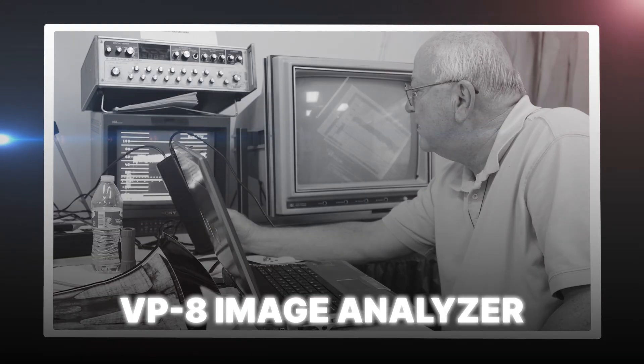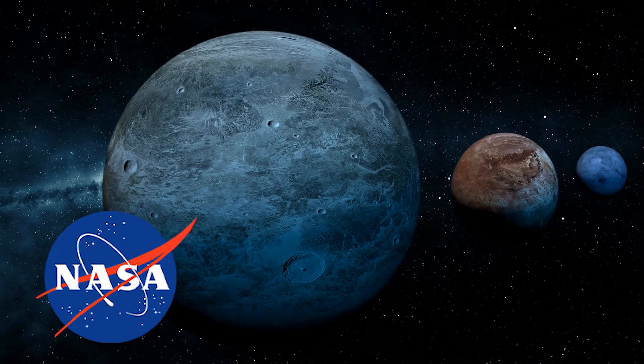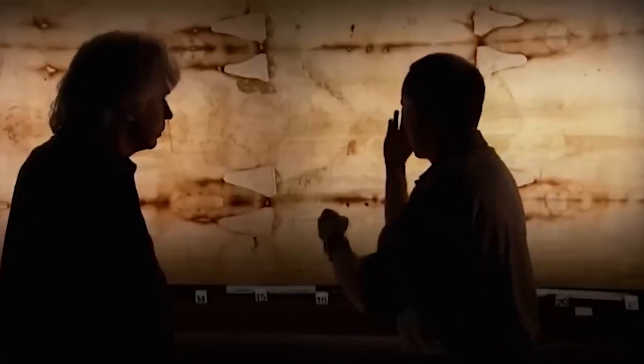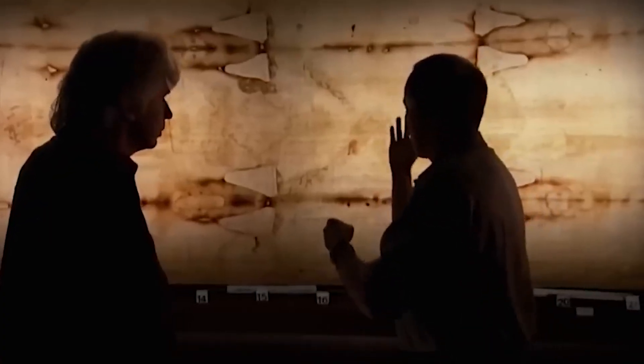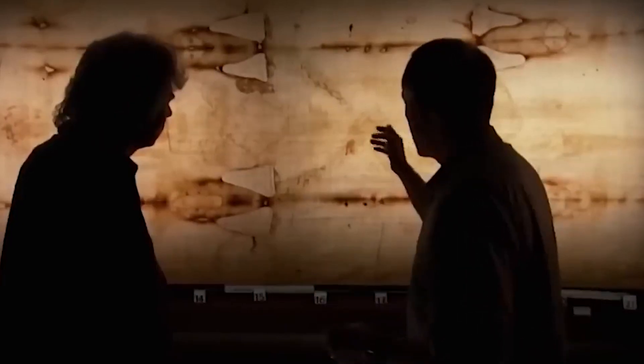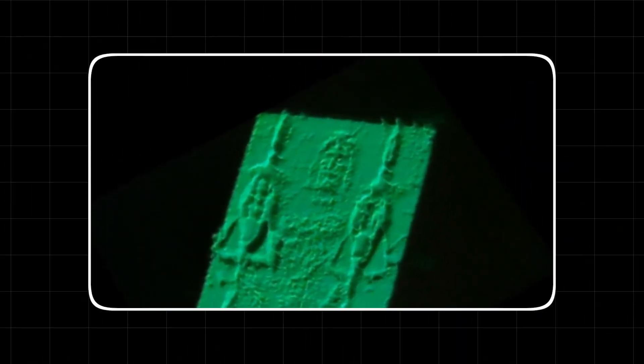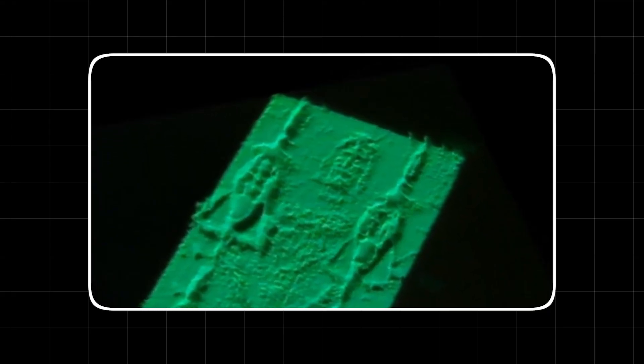But here's the kicker. The image contains accurate three-dimensional information. In the 1970s, researchers used a VP8 image analyzer, a device NASA used to map planets. On a photo of the Shroud, they were stunned. Unlike a normal photograph, the Shroud's image intensity corresponded directly to distance. Darker parts, like the tip of the nose, were closer to the cloth, while lighter parts were farther away. They generated a perfect 3D relief map. No painting or simple scorch has ever been known to contain this kind of perfect spatial data.